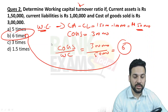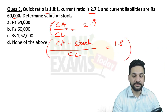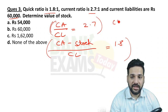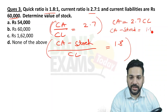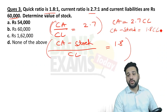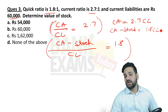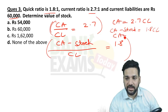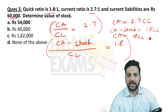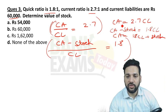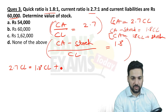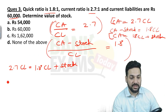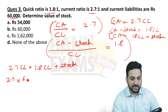We have two statements to solve. CA = 2.7 × CL, and CA − stock = 1.8 × CL. Substituting: CA = 1.8 × CL + stock. So 2.7 × CL = 1.8 × CL + stock. With CL = 60,000: 2.7 × 60,000 = 1.8 × 60,000 + stock.